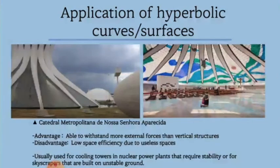These hyperbolic curves and surfaces are mainly used for cooling towers and nuclear power plants which require stability, or for skyscrapers that are built in unstable ground.